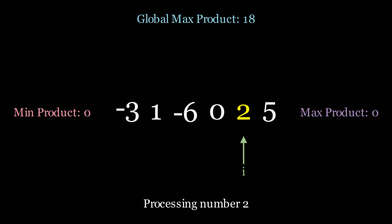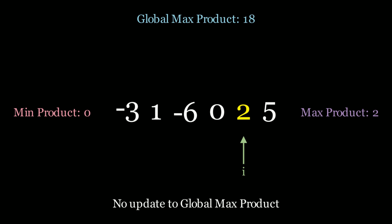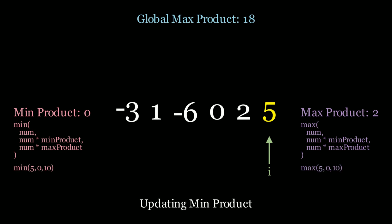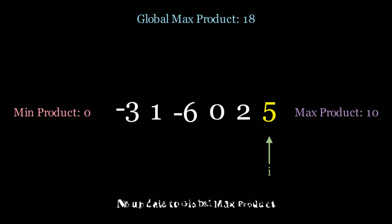Moving to element 2: for the min product we take the minimum between 2 and 0, which is 0, so we keep 0. The max product updates to 2, which is greater than 0. We don't update the global max since 18 is greater than 2. Moving to element 5: the minimum between 5, 0, and 10 is 0, so min product stays the same, and max product becomes 10. The global max product remains 18. So we're done — the max subarray product is 18.